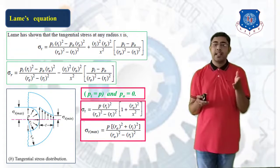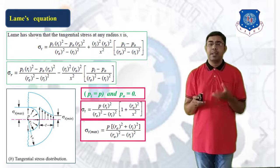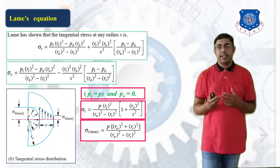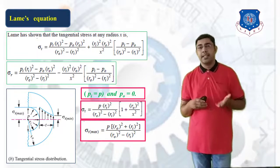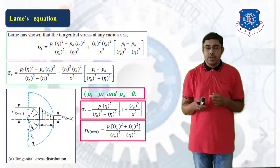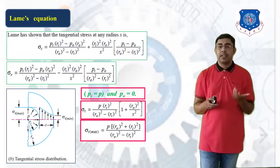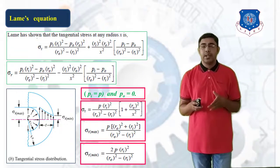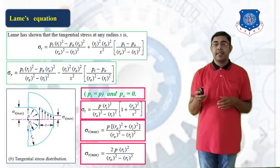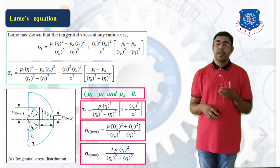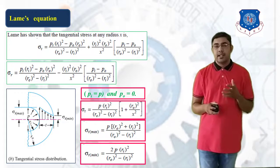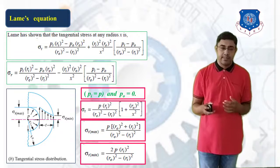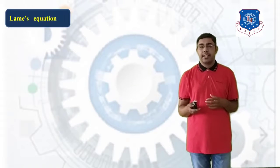The minimum tangential stress occurs at the outer surface. Placing x = Ro in the equation gives: sigma T min = (2 × P × Ri²) / (Ro² − Ri²).